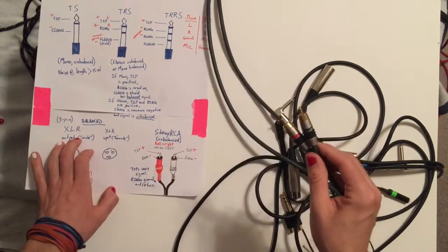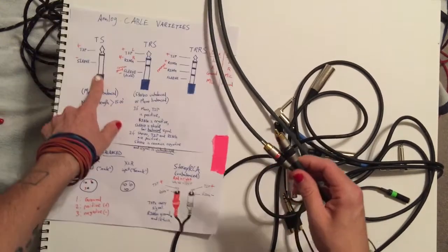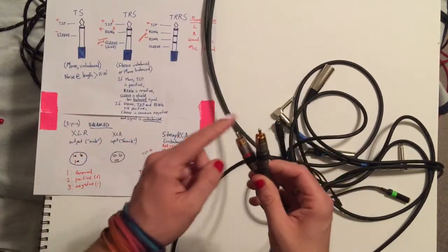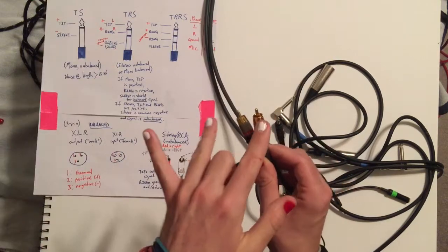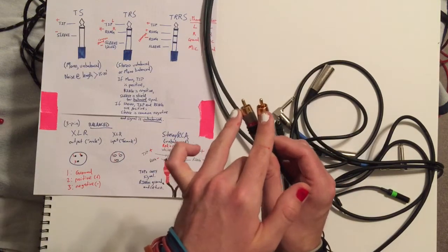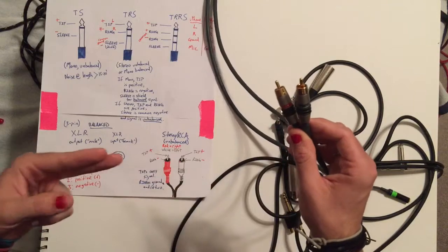These send an unbalanced signal similar to the TS cable where the tips of these is the positive, so that's what sends the signal, and then the ring on the outside is the negative, so that's receiving the signal.